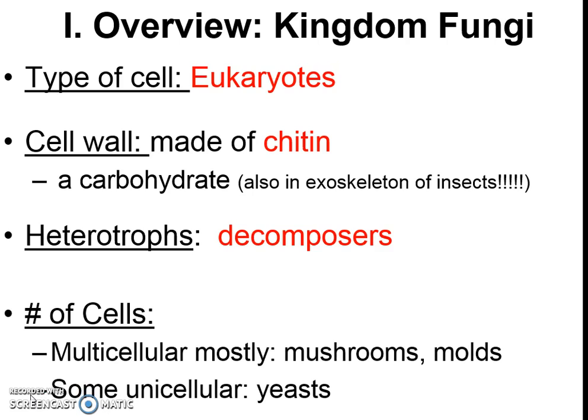Fungi have different numbers of cells — mostly multicellular, like mushrooms and molds — but there are some unicellular ones. We've even used one in class: yeast, when we did our bread activity. So it's a diverse kingdom, but it has key characteristics: it has to have a nucleus, cell walls made of chitin, and it has to be a decomposer.